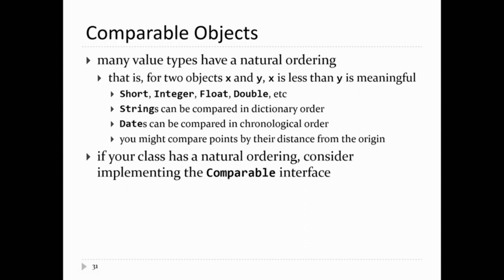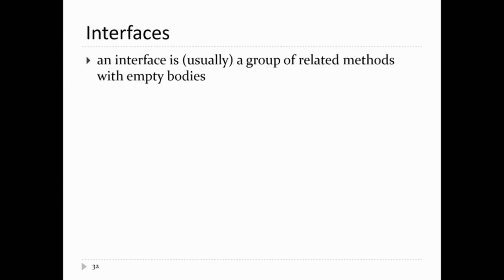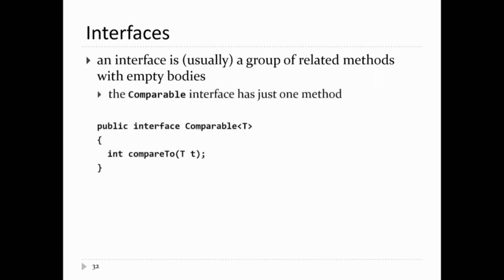And the way you do that is you implement the Comparable interface. This is the first example of a class where we're actually going to implement an interface. Doing so lets people who use your class compare your objects using less than or greater than, which lets people sort arrays or lists of your objects, or use a sorted set like a TreeSet or a TreeMap. So what's an interface? An interface is just a bunch of methods that have no implementation. List is an interface, Set is an interface, and so on. The Comparable interface has just one method.